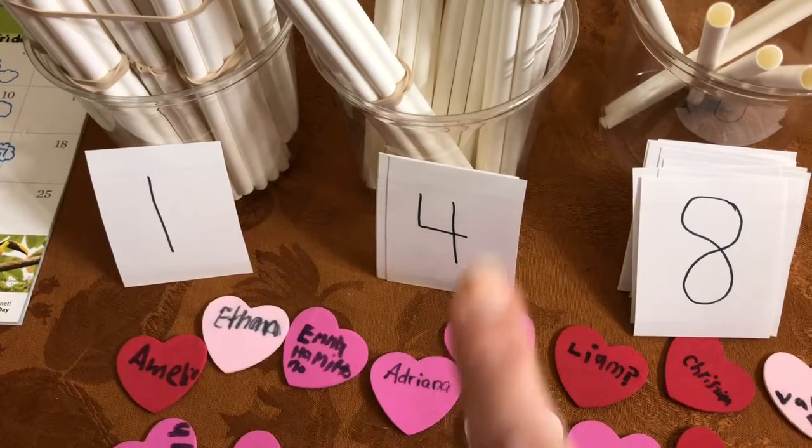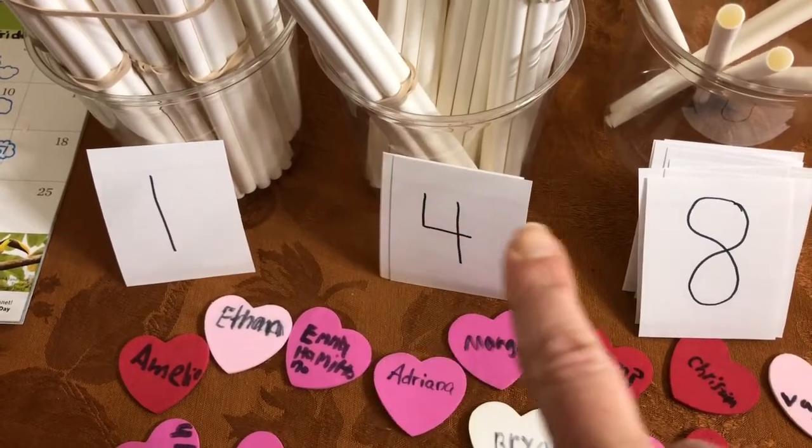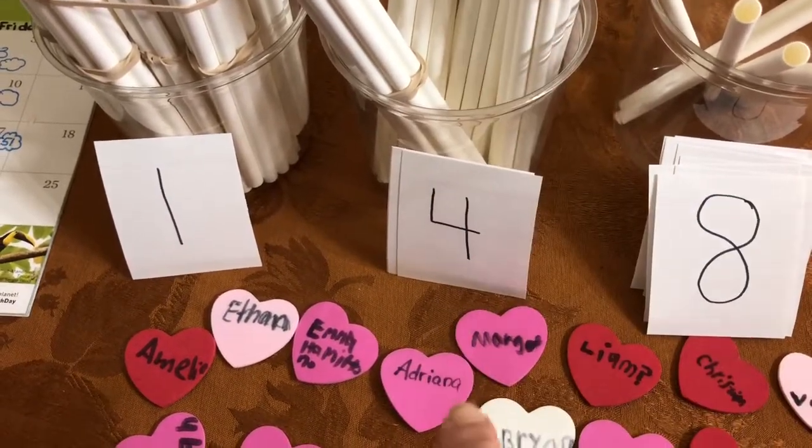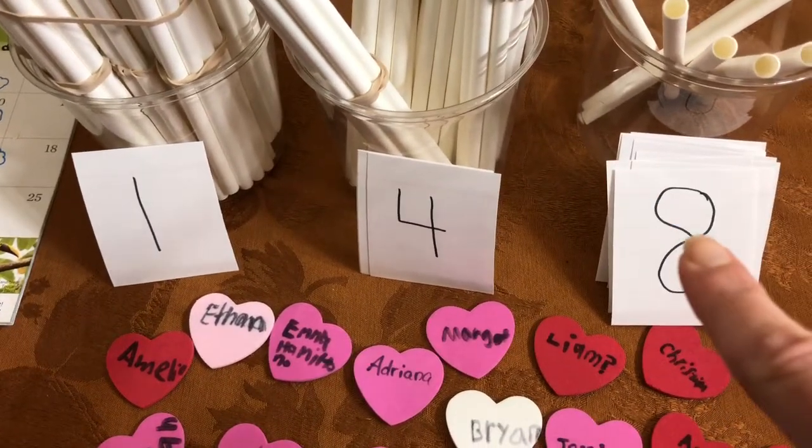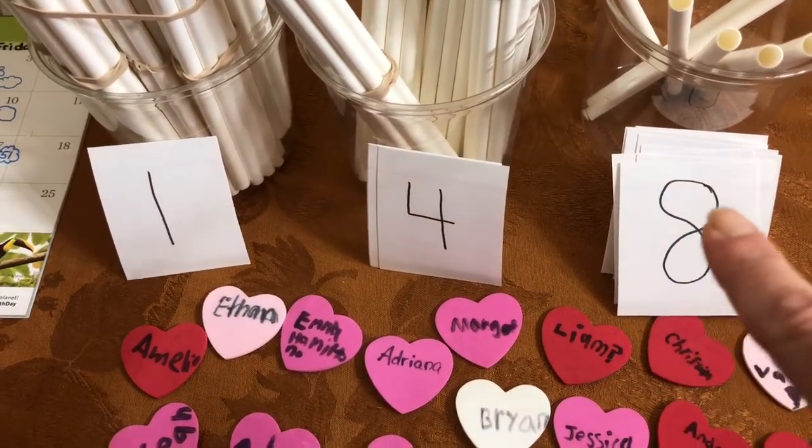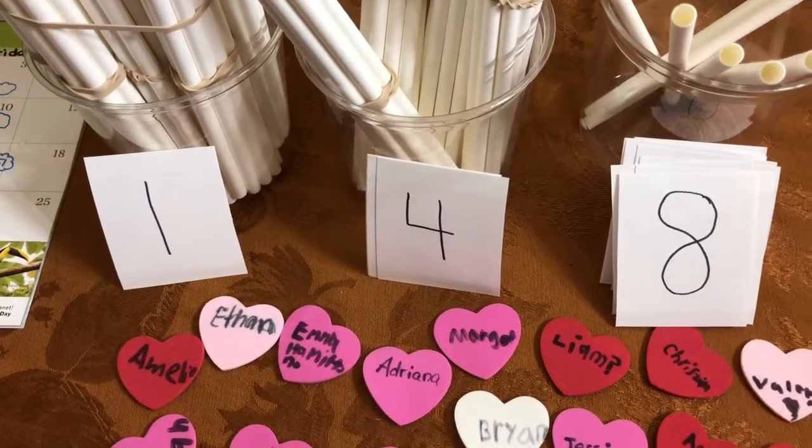1, line down. 4, line down. Line across. Line all the way down. Don't forget your little tail. And 8. Scoop around one way, scoop around the other way, and close it up. 148.